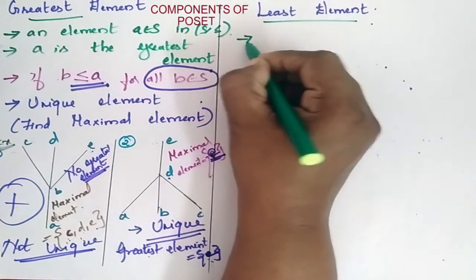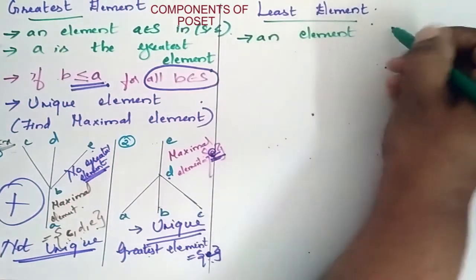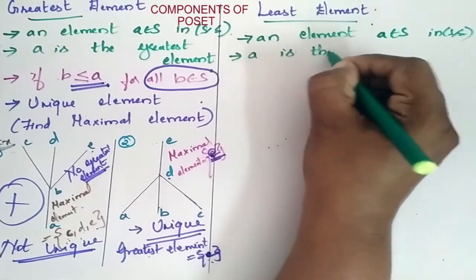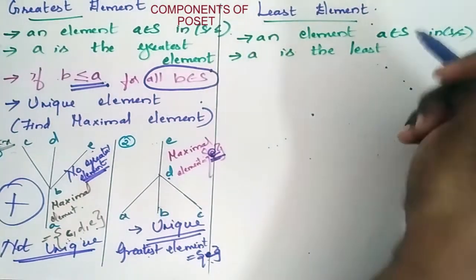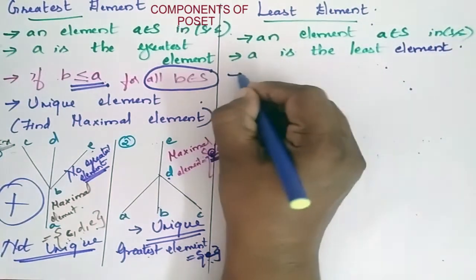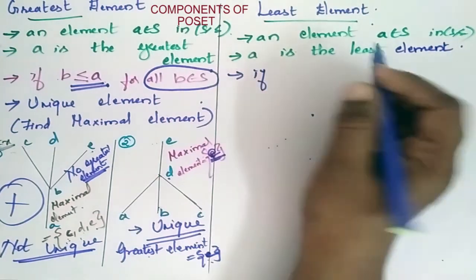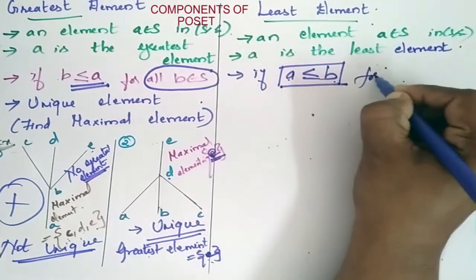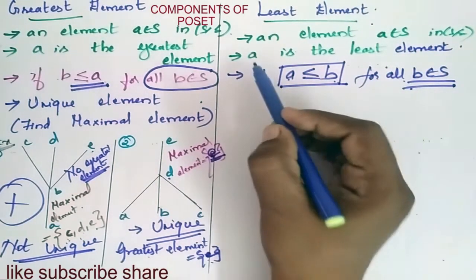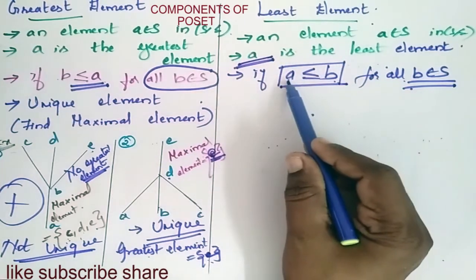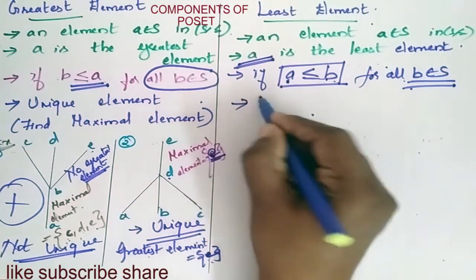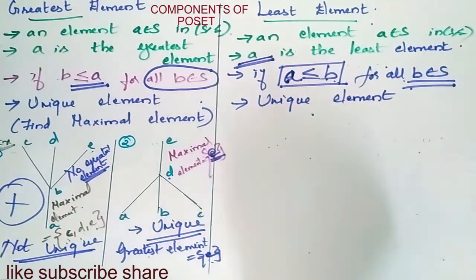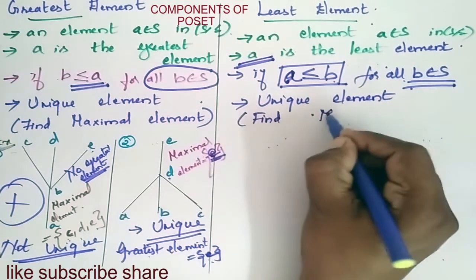Least element: an element A belongs to S in relation S. A is the least element when, for all B's that exist, your A should be lesser than B for all B. It should be a unique element — you should consider only one A. For this you have to find the minimal element first.